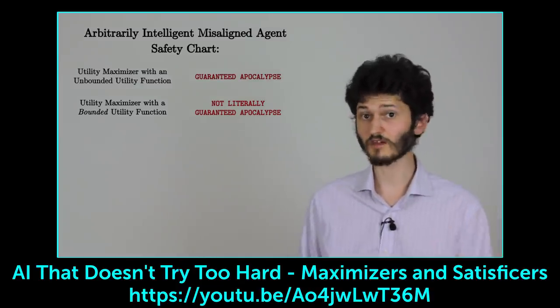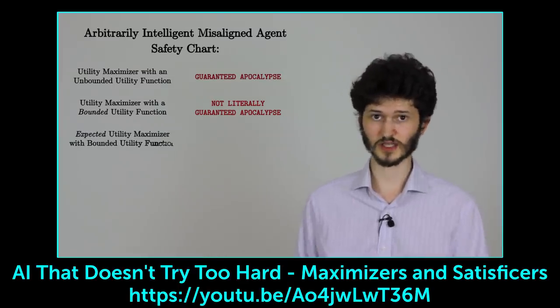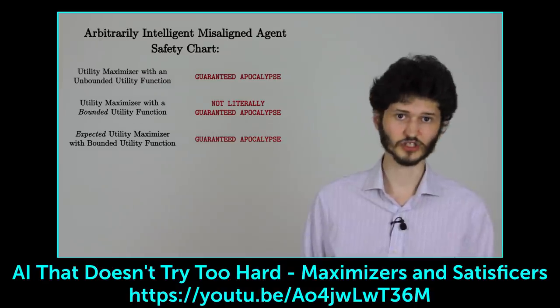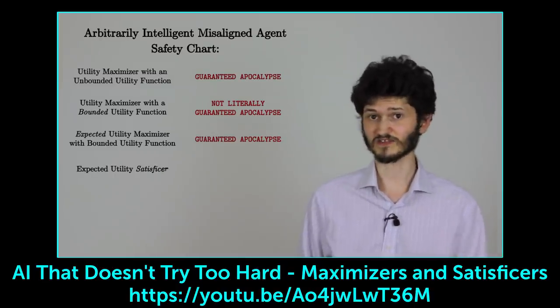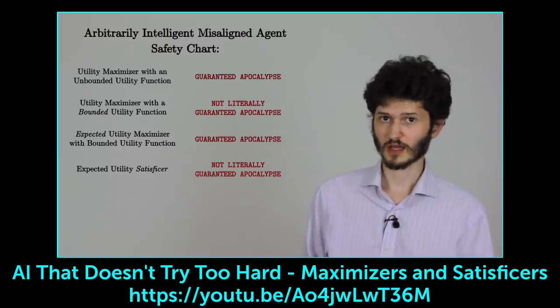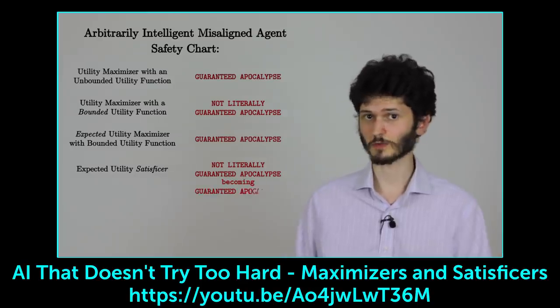But we can't build that because it needs perfect prediction of the future. So it's more realistic to consider an expected utility maximizer, which is a guaranteed apocalypse, even with a bounded utility function. Now, an expected utility satisficer gets us back up to indifference between good outcomes and apocalypses. But it may want to modify itself into a maximizer, and there's nothing to stop it from doing that. The situation doesn't look great.